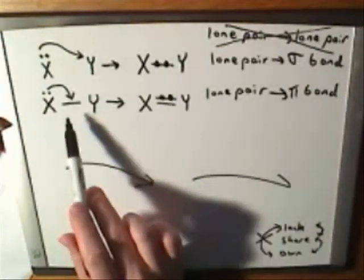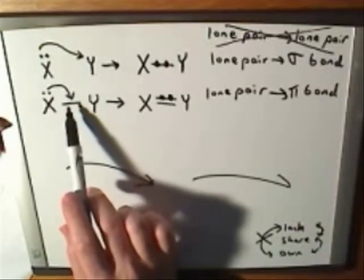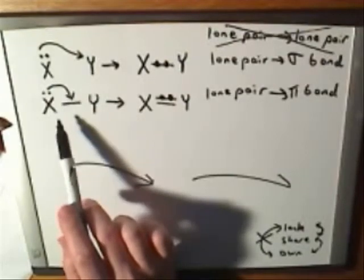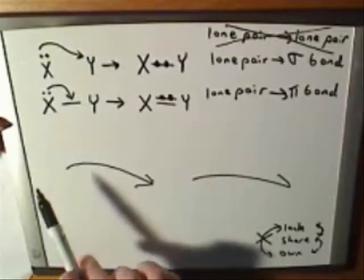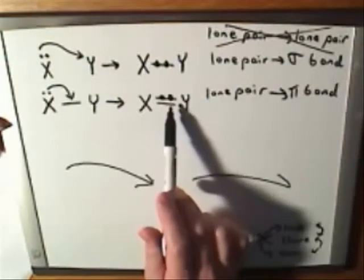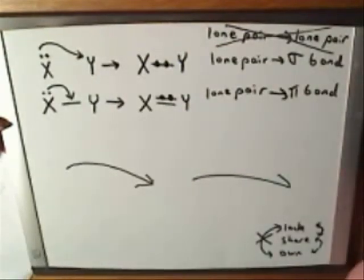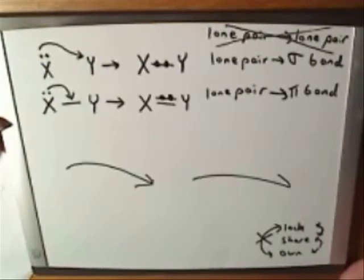Similarly, with the next arrow — a double-headed arrow — it indicates the movement of two electrons. So we took two electrons out of a lone pair and put those two electrons into a bond. I just wanted to point out that we are working with double-headed arrows, which means each arrow tells you about the movement of a pair of electrons — two electrons.